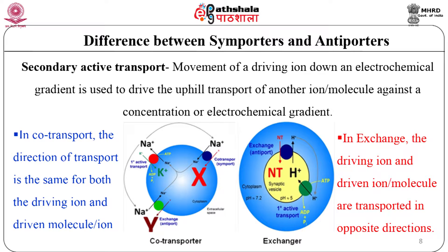In secondary active transport, the movement of the driving ion down an electrochemical gradient is used to drive the uphill transport of another molecule against the concentration gradient. In co-transport, the direction of transport is the same for both the driving ions and driven molecules, whereas in exchange, the driving ion and driven ion are transported in opposite directions.